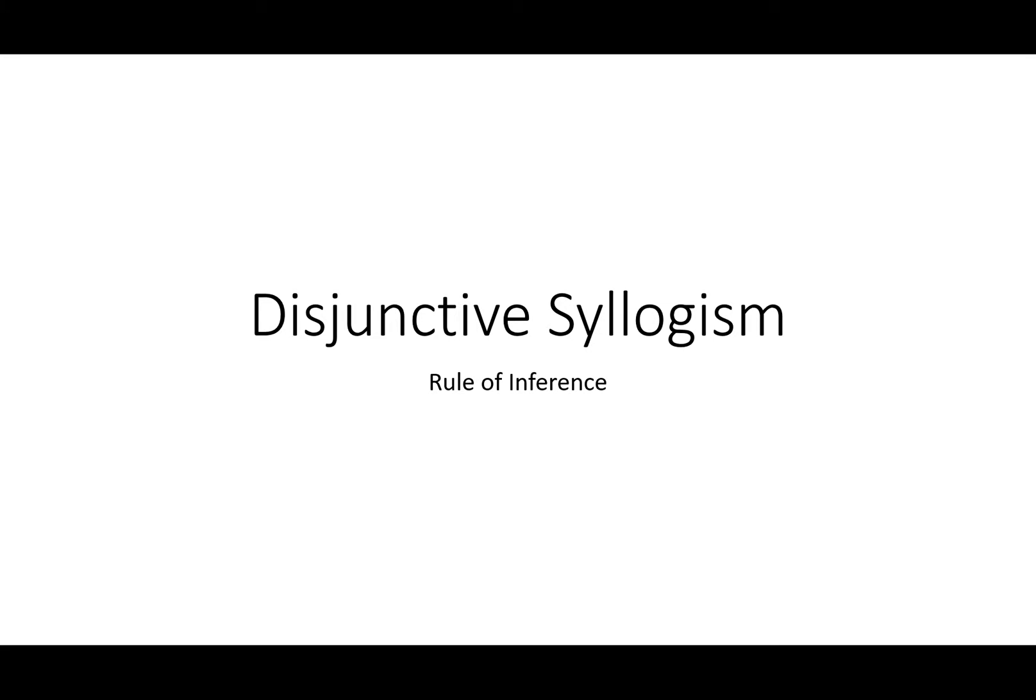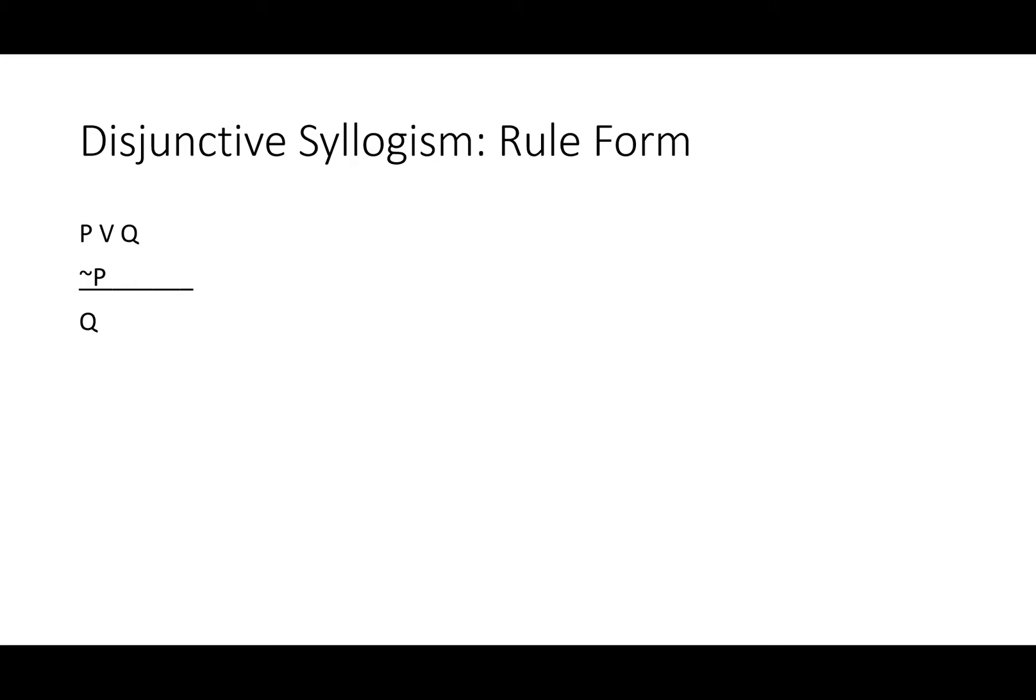Disjunctive syllogism, a rule of inference. Either P or Q, not P, so Q. Like all rules of inference, this is composed of premises and the conclusion they entail.